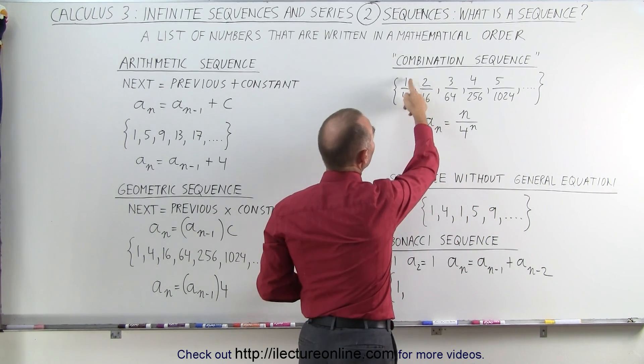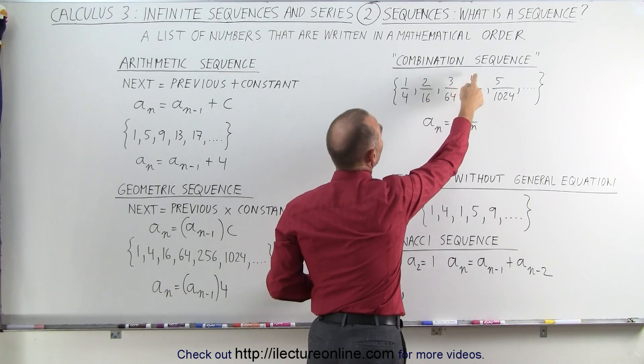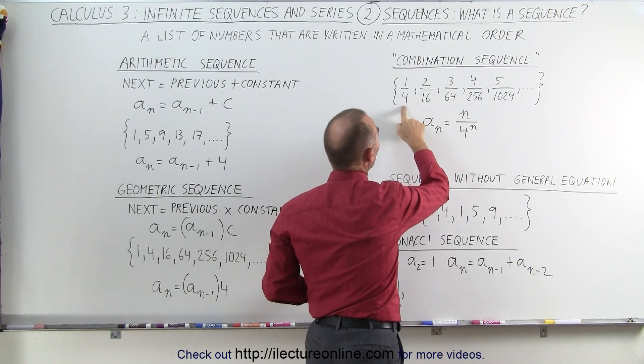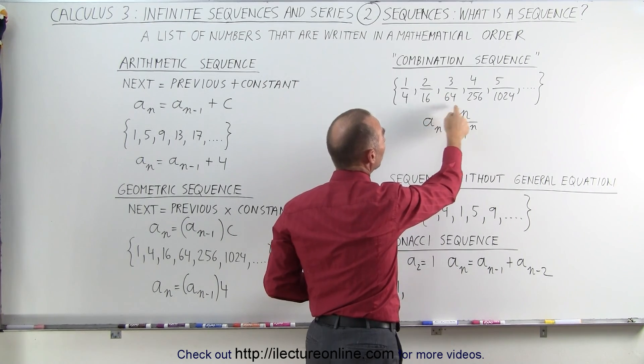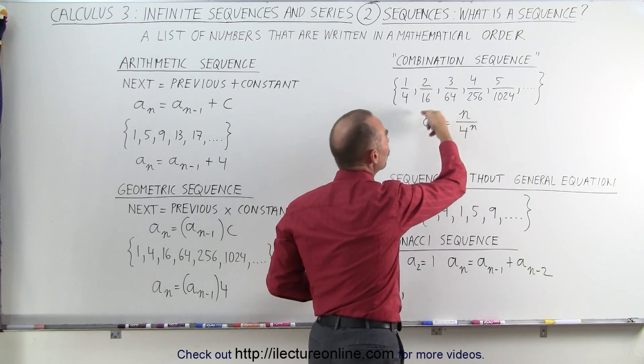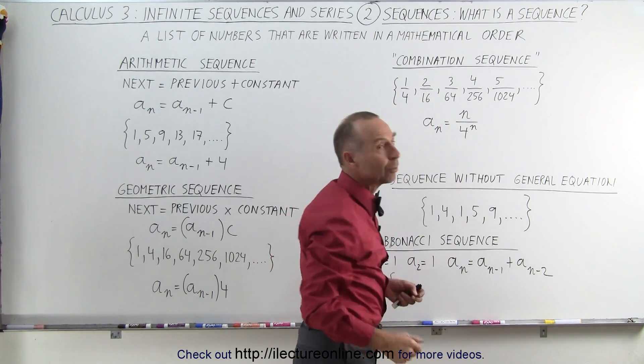Notice that n is 1, n is 2, n is 3, n is 4, and so forth. And the denominator becomes 4 to the first power, 4 to the second power, 4 to the third power, and so forth. So yes, we can put a general equation to this particular sequence, indicating the value of each of the numbers in the sequence.